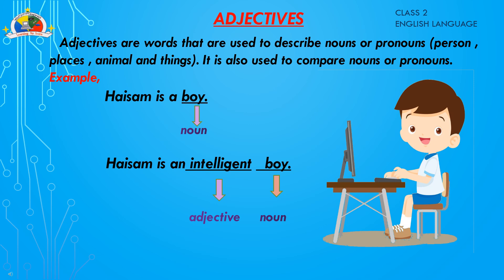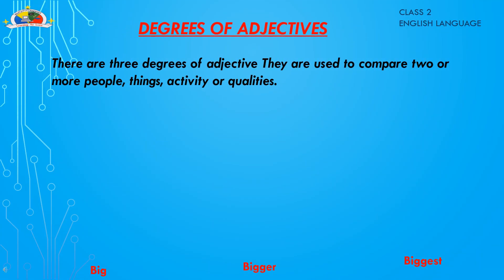There are three degrees of comparison in adjectives, used to compare two or more people, things, activities, or qualities. They are: the positive degree, the comparative degree, and the superlative degree. When we say 'this is a big cherry,' we are not comparing it with any other cherry — we are only talking about one big cherry.